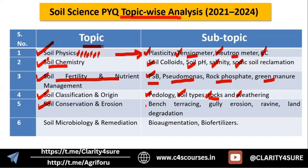Next is soil conservation and erosion. Different agronomic and engineering measures include bench terracing, gully erosion, ravening, and land degradation. The last important heading is soil microbiology and biofertilizers, from where questions were on bio-augmentation and biofertilizers. This is the chart of the major headings from where questions are coming.